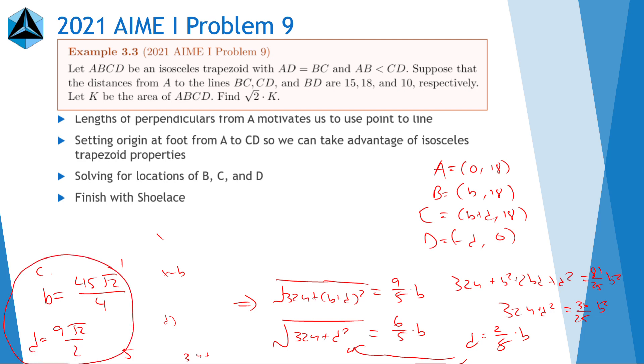And then after here, it's pretty straightforward to compute the area of the trapezoid to be 567 over square root of 2. So our answer is 567.